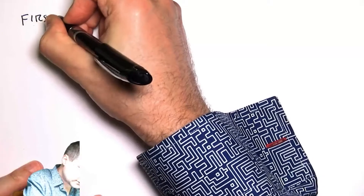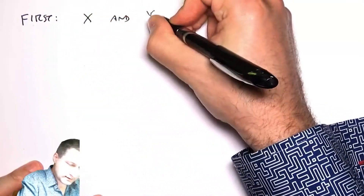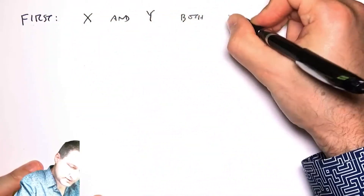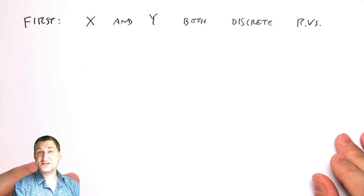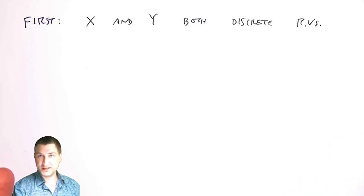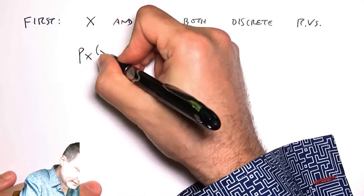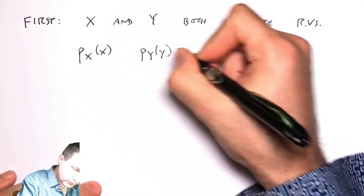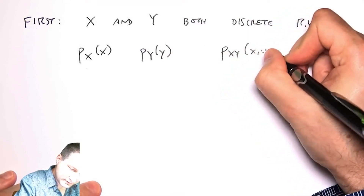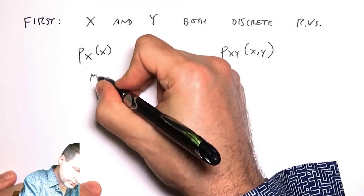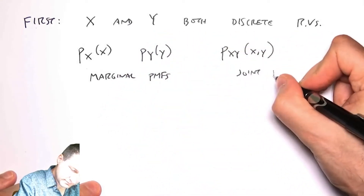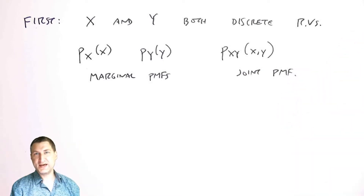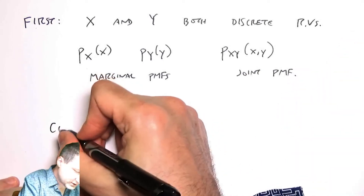First I want to talk about the easiest case: X and Y are both discrete random variables. That means X has a PMF, Y has a PMF, and they have a joint PMF. So I have a marginal PMF for X, a marginal PMF for Y, and I have a joint PMF. What I'm interested in today is what I'm going to call the conditional PMF.